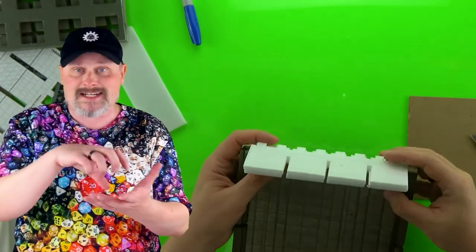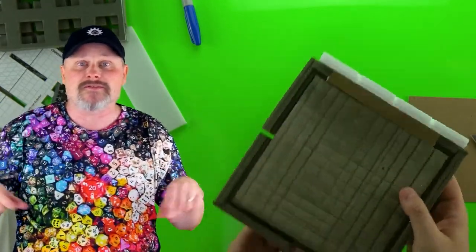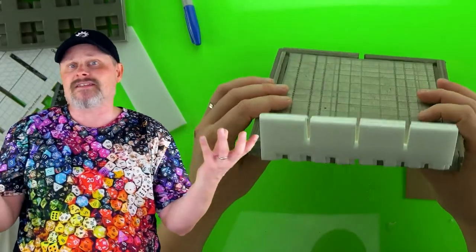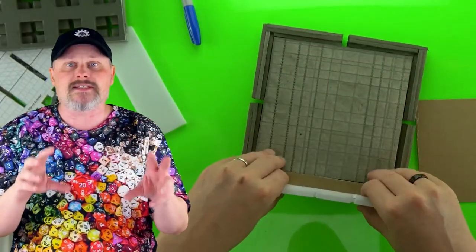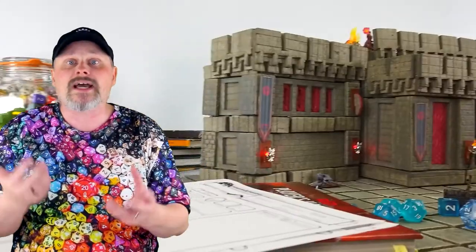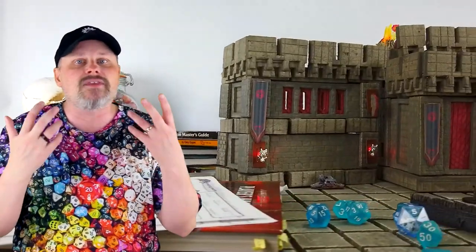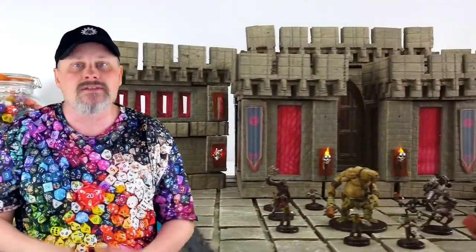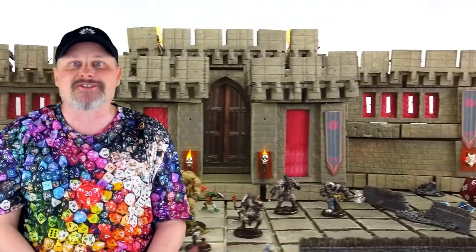Clip-ons are items that will clip on to the borders of grid tiles. This can be things like crenellations, which we're going to be making in this video, or like a railing or a half-height wall. Basically anything you want to have attached to the border of a grid tile, you can make with clip-ons. So let's get started.